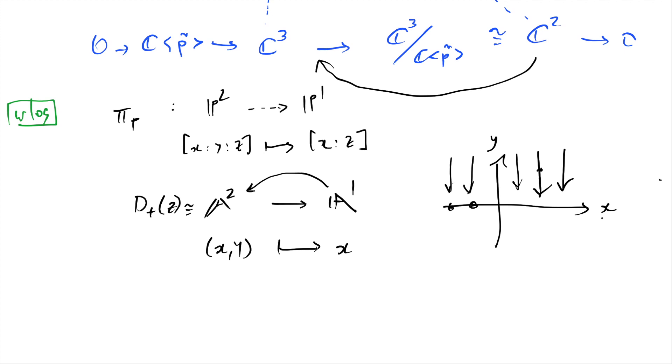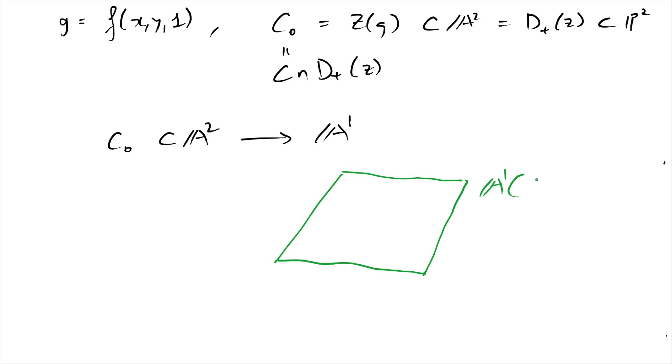So that I can draw my pictures, let's just specialize to this affine chart. So I will just plug in 1 into my f and work with c0. This will be the zero set of g instead of a2, which I'm identifying with one of these affine charts in p2 where z is invertible. This will be just the z equals 1 subset of c. Now I have c0 in a2 and I can go to a1. The situation here is nicer because a1 is already a complex curve. It's not projective, but it's essentially p1.